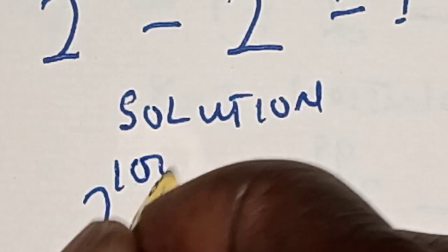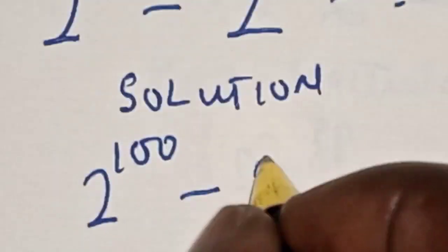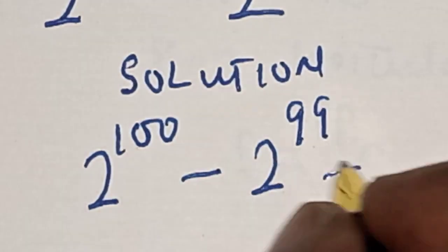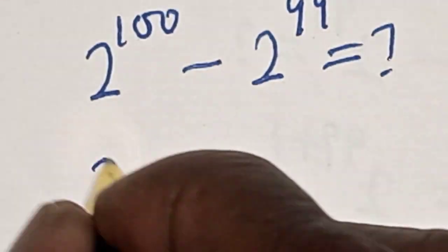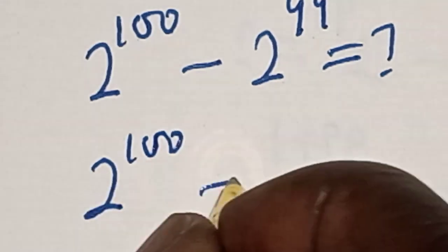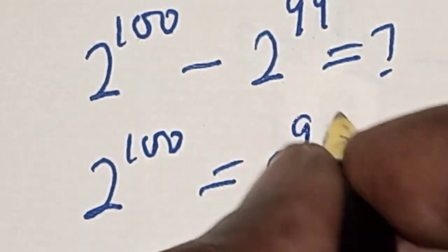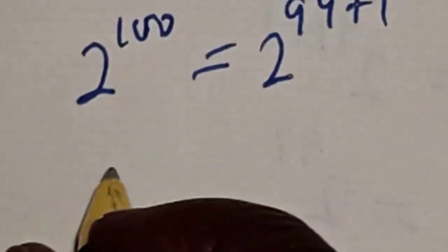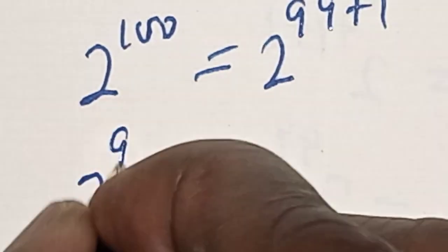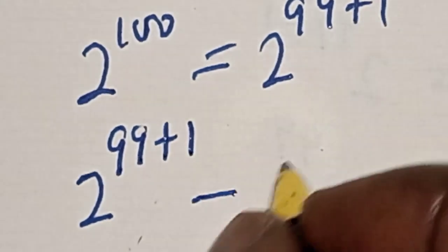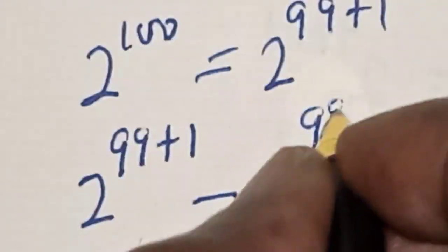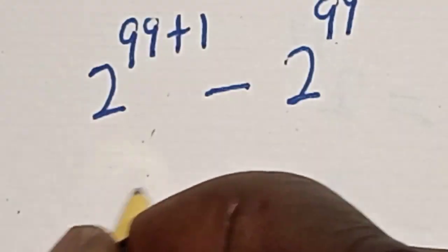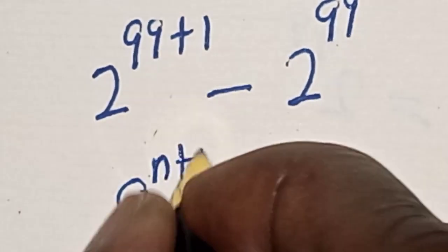2 raised to power 100 minus 2 raised to power 99, then is equal to what? Let's see — 2 raised to power 100 is equal to 2 raised to power 99 plus 1. Let's substitute: 2 raised to power 99 plus 1, minus 2 raised to power 99.